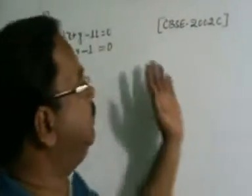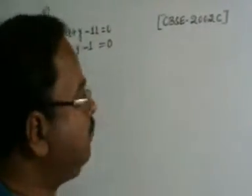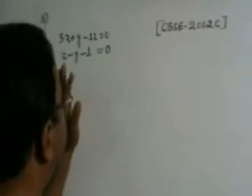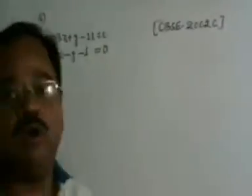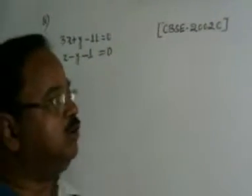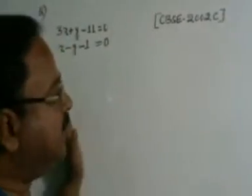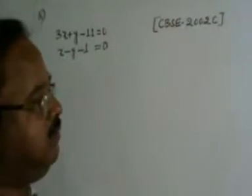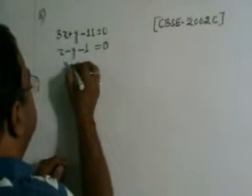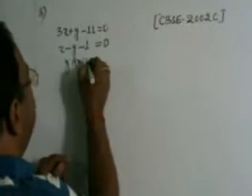CBSE 2002 compartmental. You solve the following system of linear equations: 3x plus y minus 11 is equal to 0, and x minus y minus 1 is equal to 0. So, I have to shade the region bounded by these lines and y-axis.